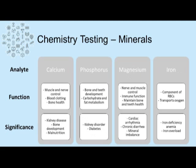Creatinine supplies energy to muscles, and abnormal results can indicate kidney disease. Minerals tested in the clinical chemistry lab include calcium, used for muscle and nerve control, blood clotting, and bone health; abnormal levels could indicate kidney disease, bone development issues, or malnutrition. Phosphorus is used for bone and teeth development and carbohydrate and fat metabolism; abnormal results could reflect kidney disorder or diabetes. Magnesium is used for nerve and muscle control, immune function, and maintaining healthy bones and teeth; abnormal results could indicate cardiac arrhythmia, chronic diarrhea, or mineral imbalance. Iron is a component of red blood cells used to transport oxygen; abnormal results could indicate iron deficiency or iron overload.